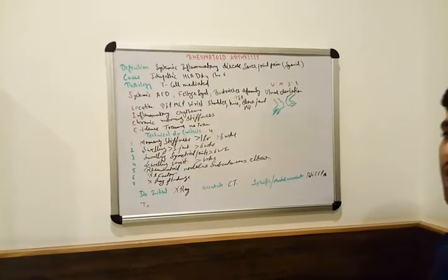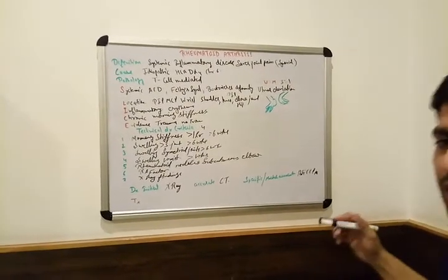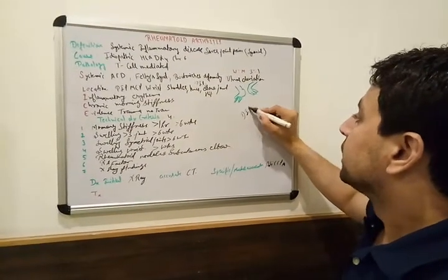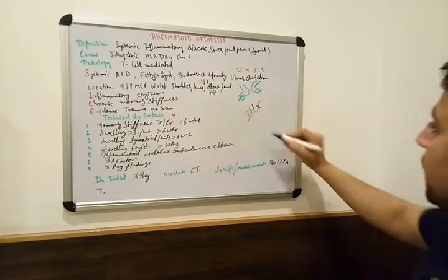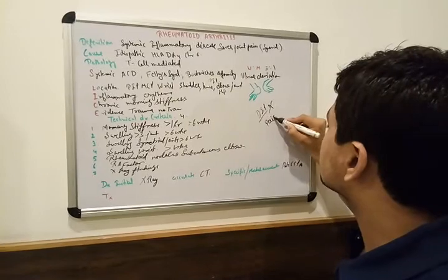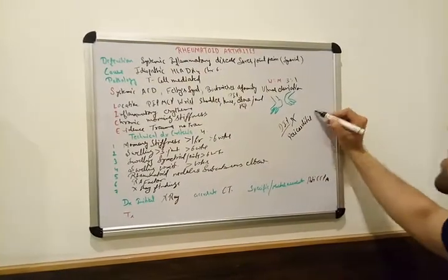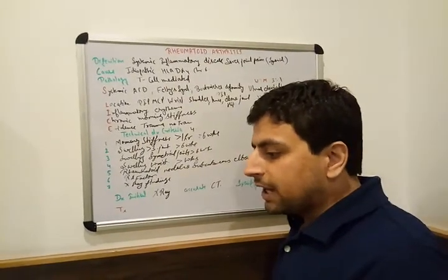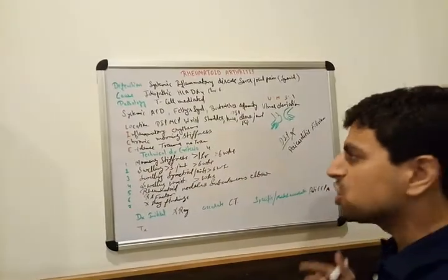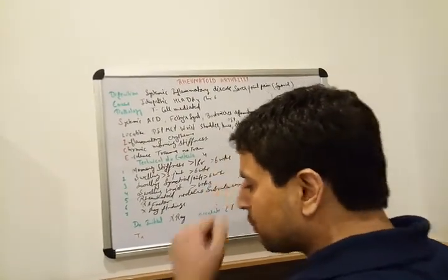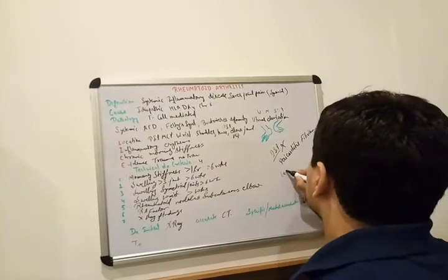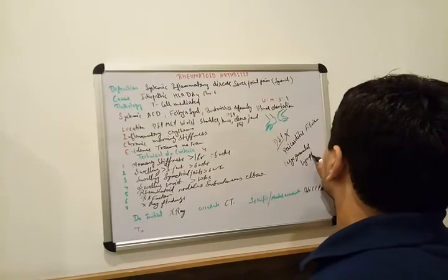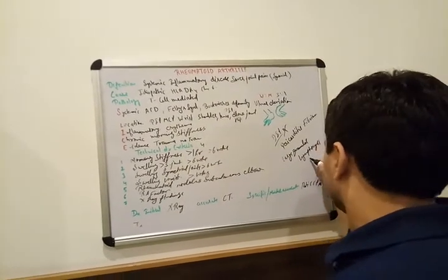Rheumatoid Arthritis is a systemic disease that can involve any part of the body. However, the DIP joints are not involved — there is no involvement of the distal interphalangeal joints. In the heart, it causes pericarditis with fibrinous fluid. The most common cancer associated with Rheumatoid Arthritis is large granular lymphocytic leukemia.